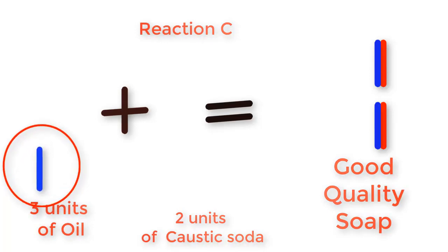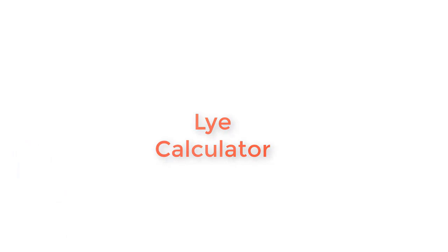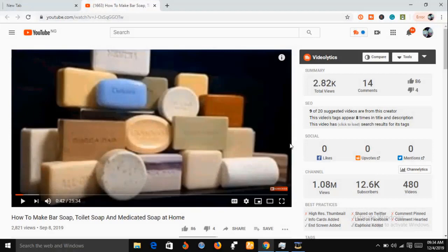As a soap producer, you want to keep a standard where there is no excess caustic soda, and if there is excess oil it should be within a range that doesn't make the soap too soft. To achieve this perfectly, we will use what is called the lye calculator. Remember, lye means a solution of caustic soda. The lye calculator will give you exactly the specific amount of oil needed to combine with a specific amount of caustic soda to produce a good quality soap.